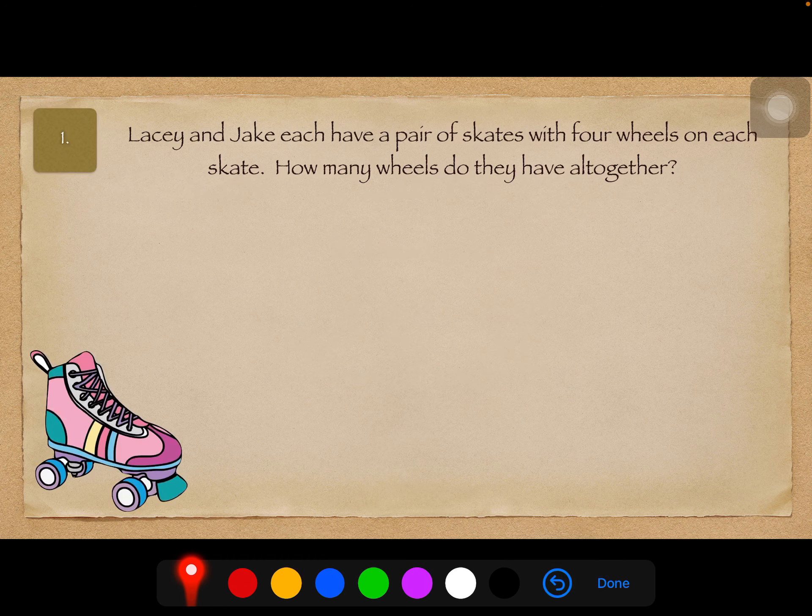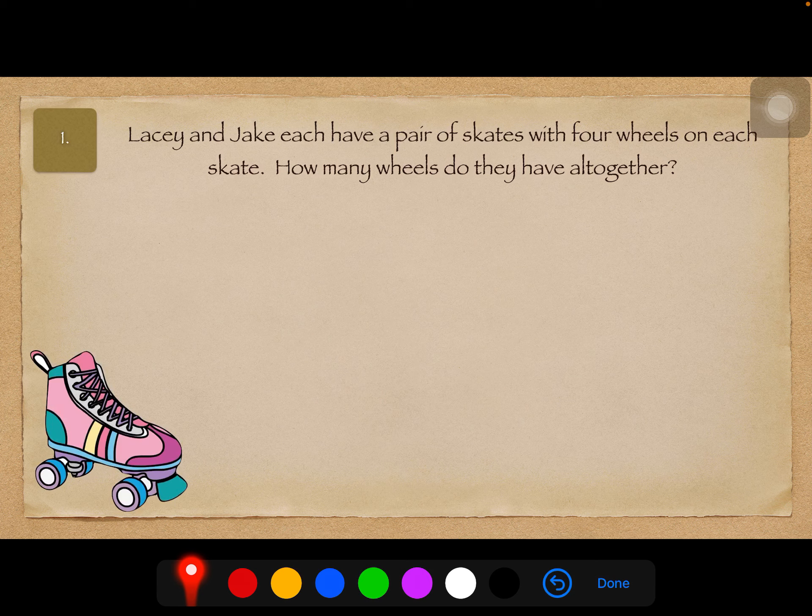Alright, number 1, it says Lacey and Jake each have a pair of skates with four wheels on each skate. How many wheels do they have all together?